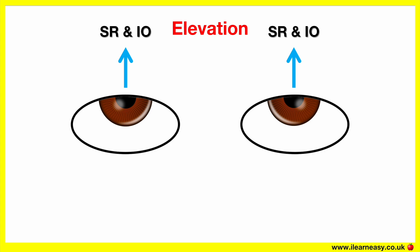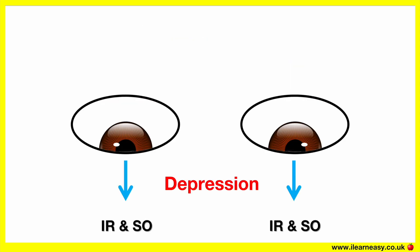Elevation — this is when you ask the patient to look directly up. This position assesses the functions of the superior rectus and inferior oblique muscles. Depression — this is when you ask the patient to look directly down. This position assesses the functions of the inferior rectus and the superior oblique.